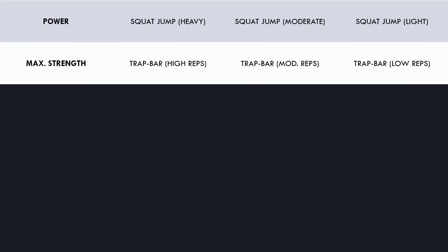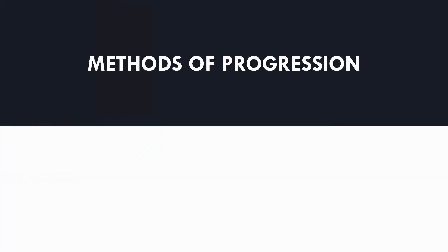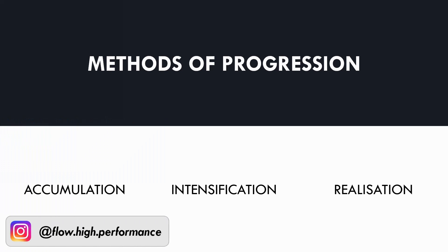Now that exercise selection has been covered, we need to explore what methods of week-to-week progression will apply to our mesocycle. We have three general models of progression that strength and conditioning training can follow: an accumulation progression, an intensification progression, and a realization progression.